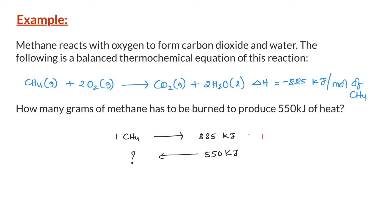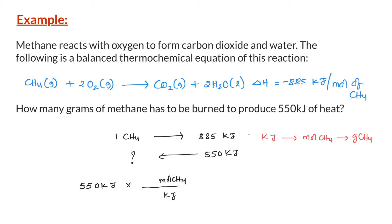We need to calculate the amount of methane required to produce only 550 kilojoules of heat. We first convert the kilojoules of heat into moles of methane using the molar mass of methane. We start with 550 kilojoules and multiply this with a conversion factor that has kilojoules of heat in the denominator and moles of methane in the numerator. According to the balanced thermochemical equation, this is 1 mole of methane per 885 kilojoules of heat released, and the kilojoules cancel.